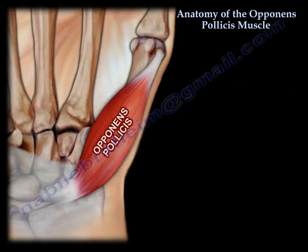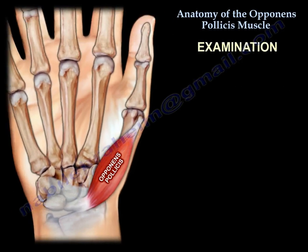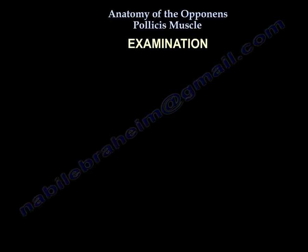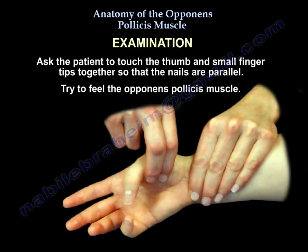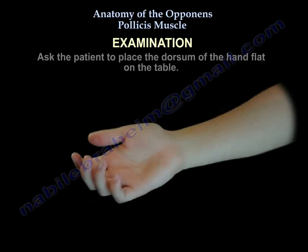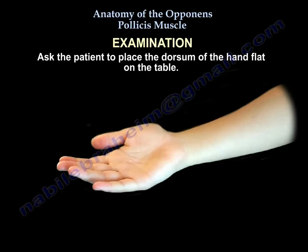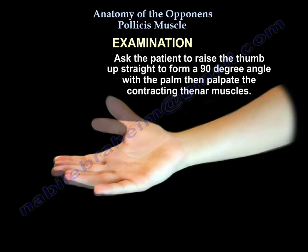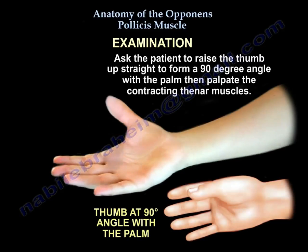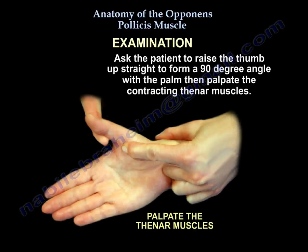Examination of the opponens pollicis. First, ask the patient to touch the thumb and the small fingertips together so the nails are parallel, and try to feel the muscle. Second, ask the patient to place the dorsum of the hand flat on the table, raise the thumb up straight to form a 90-degree angle with the palm, then palpate the thenar muscle contracting.